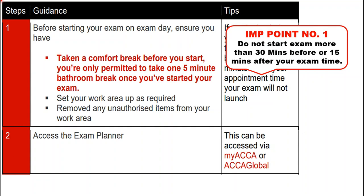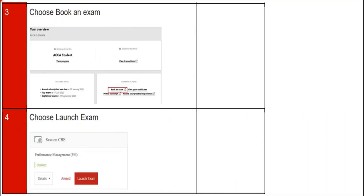Step two is the actual start of your ACCA Remote Exam process. Access the exam planner using your login details from My ACCA or the ACCA Global website. Step three: choose the 'Book an Exam' tab. After logging into your ACCA account, click on the 'Book an Exam' tab as shown on the screen.